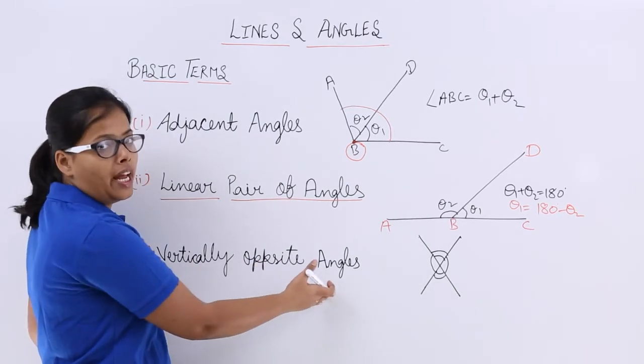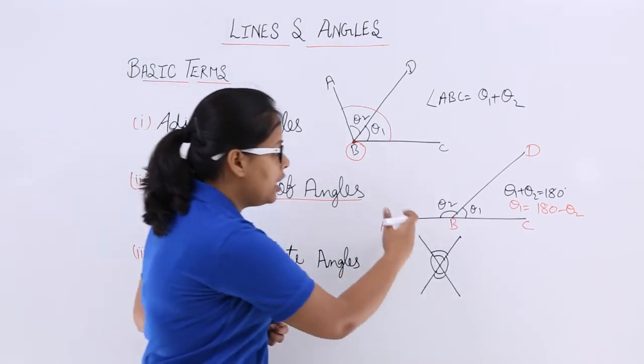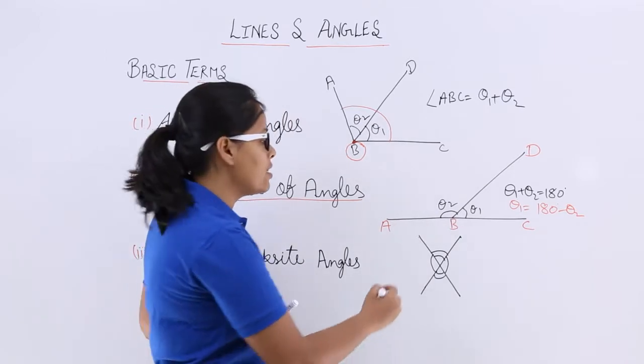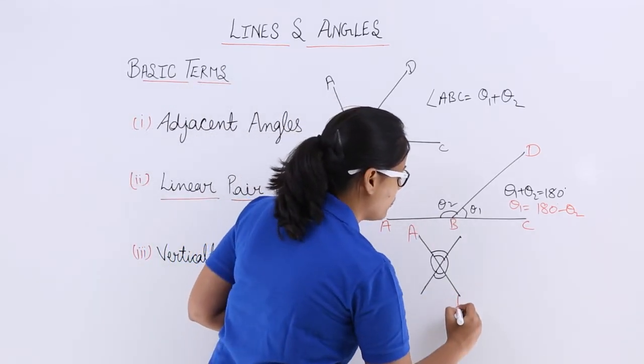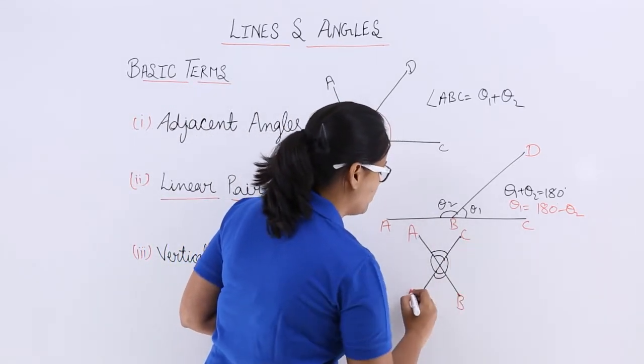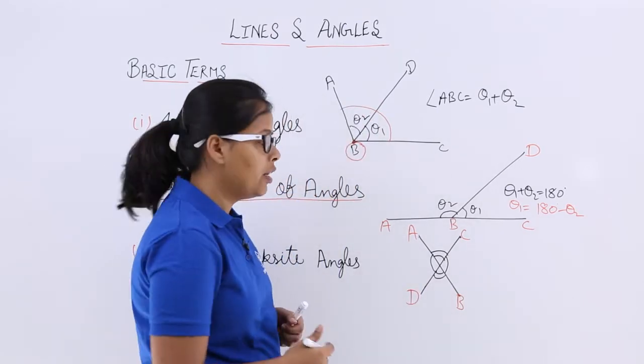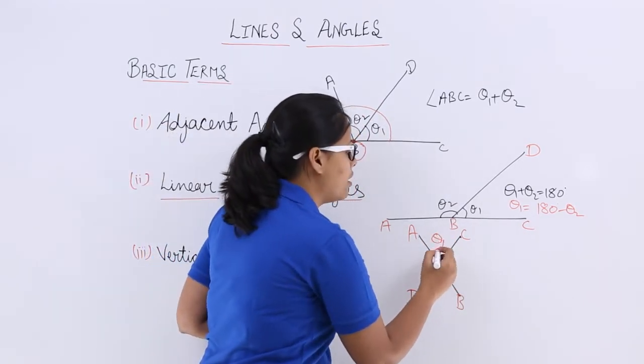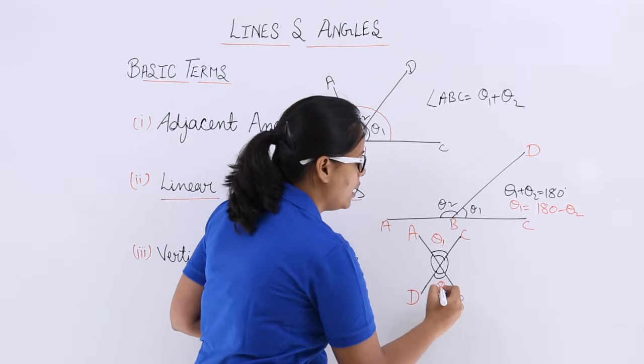It is vertically opposite angles. These are two intersecting lines, suppose AB and CD.